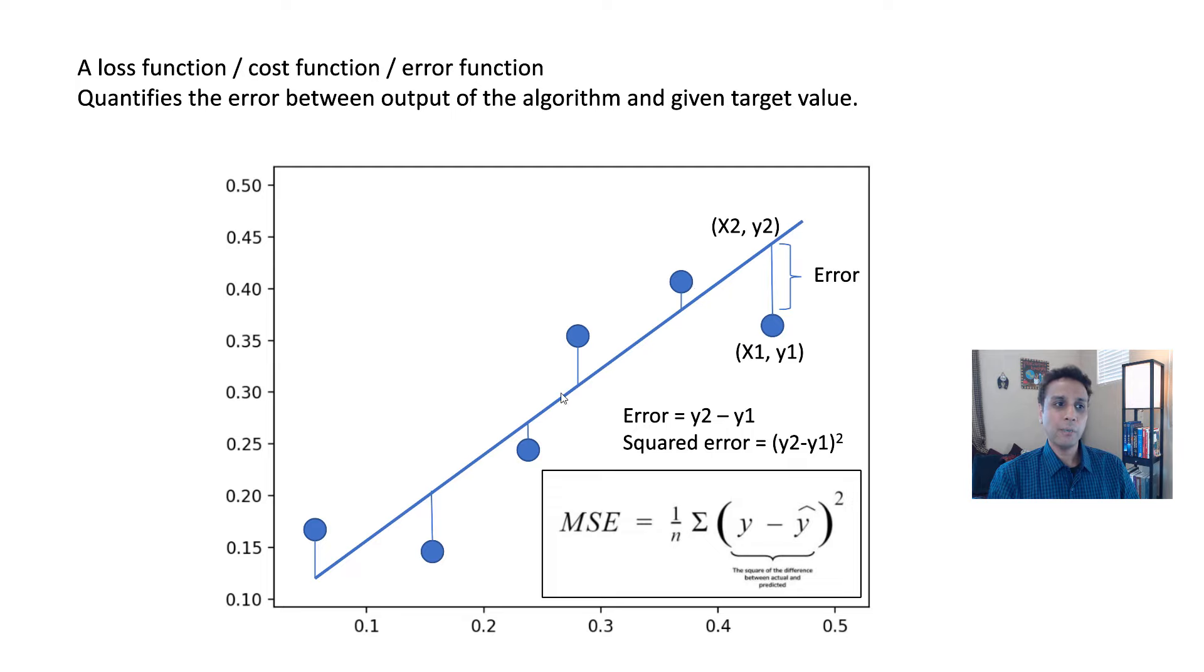So that's where the squared error is coming from, and now it's just for one data point. Now you need to do that for every data point, which means you have to take the mean or average of all of these data points. This is where the term mean squared error comes from.